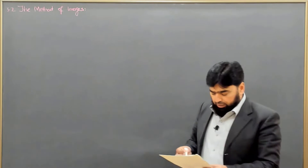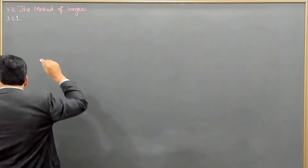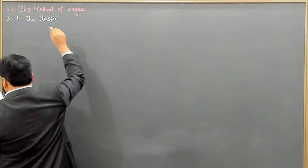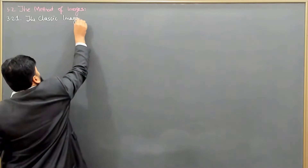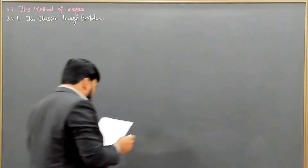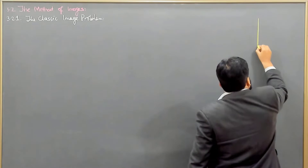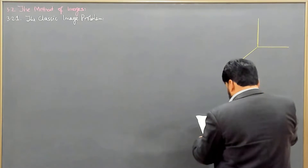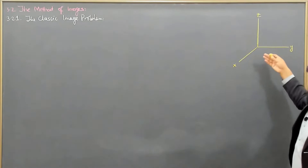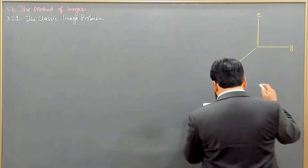In section 3.2.1, we consider the classic image problem. We set up our coordinate axes with the x-axis, y-axis, and z-axis, such that the xy-plane defines the plane of this geometry while the z-axis is perpendicular to this plane.